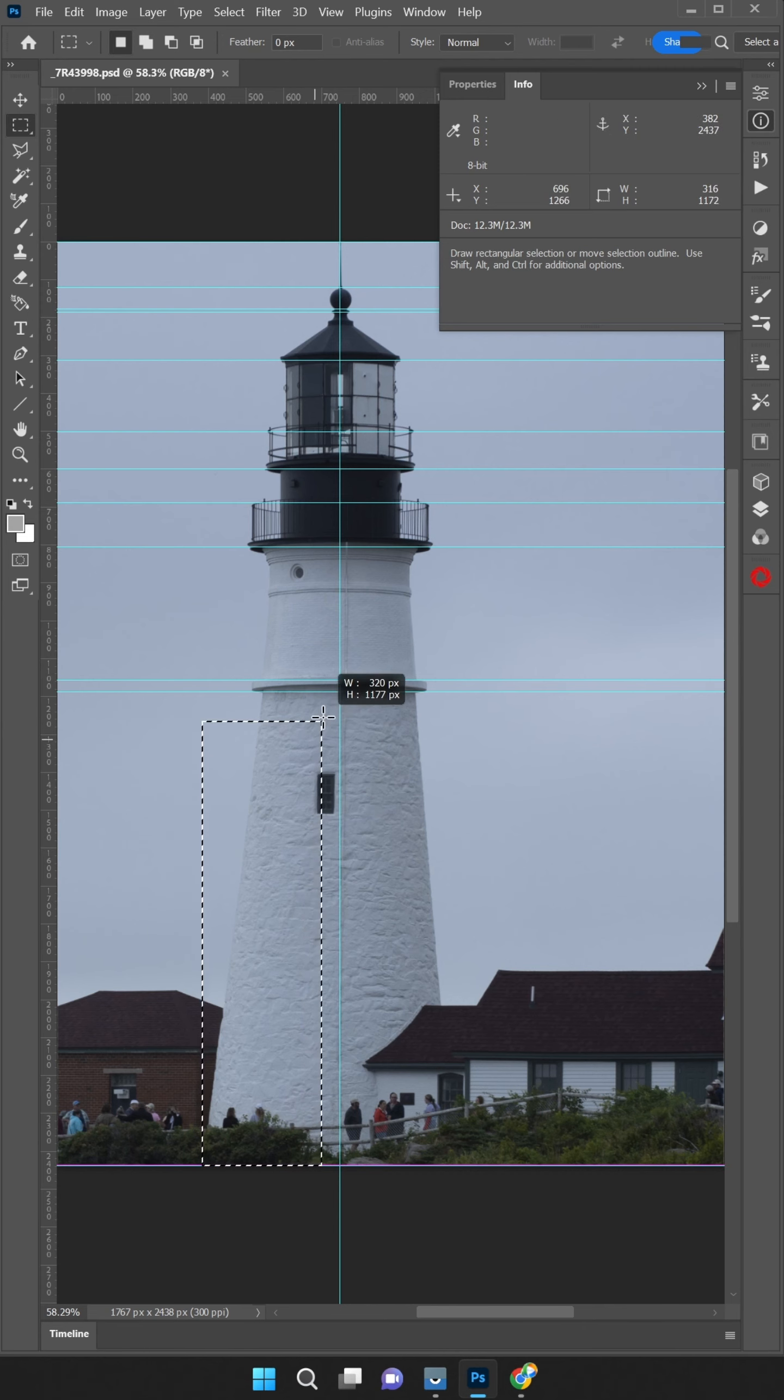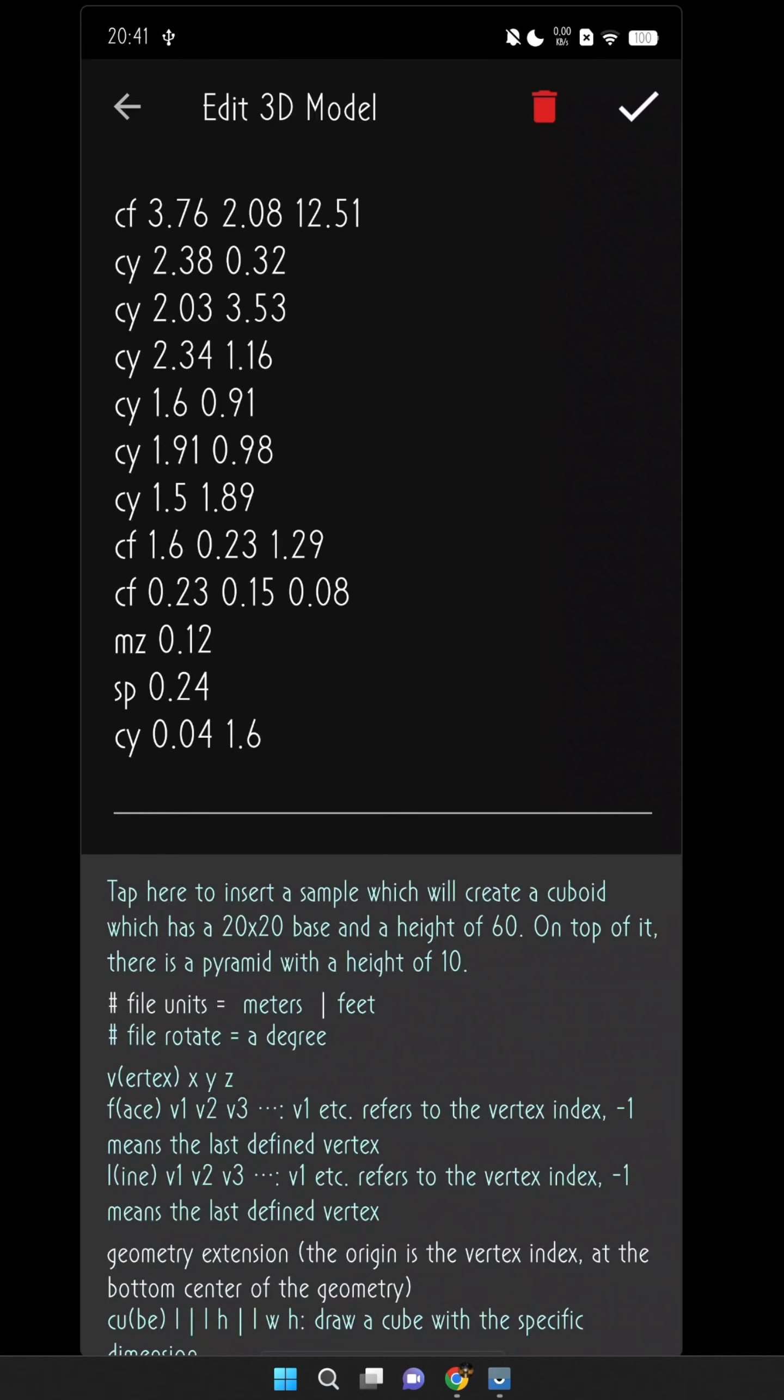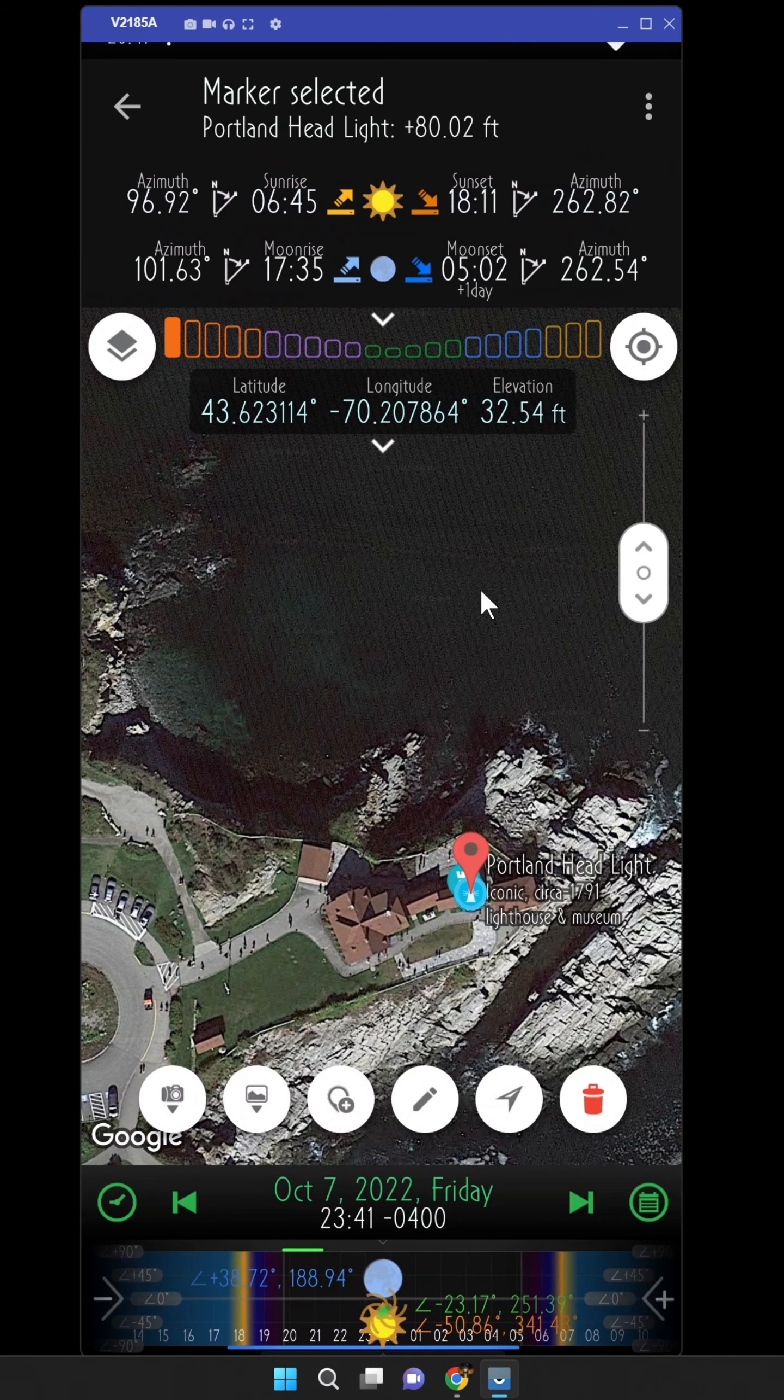For example, if we start at the bottom and select this area, the height is 1,251 pixels, which is 12.51 meters. The radius of the base is 368 pixels, which is 3.68 meters. And so forth. I won't go through all the details, but here is the final script. So now, I'll just copy it and paste it into PlanIt. And we're done.